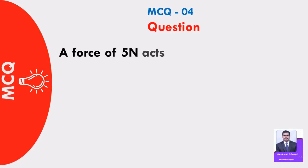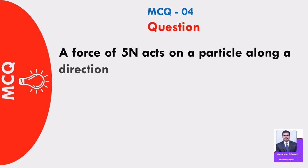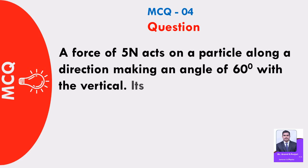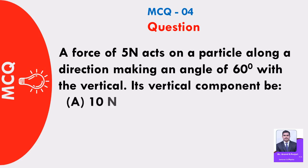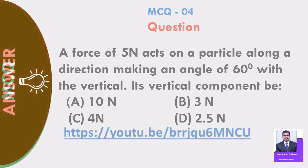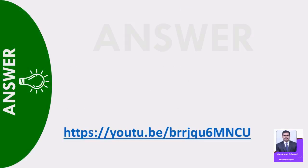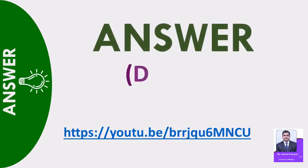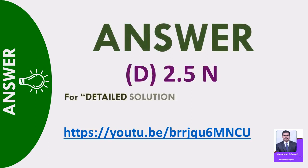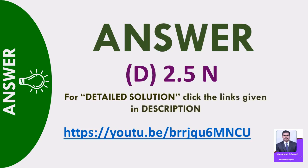MCQ 4: A force of 5 newton acts on a particle along a direction making an angle of 60 degrees with the vertical. Its vertical component: A) 10 N, B) 3 N, C) 4 N, D) 2.5 N. Answer: Option D — 2.5 N. For detailed solution, click the links given in description.